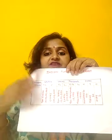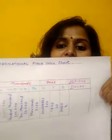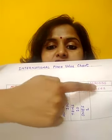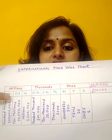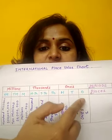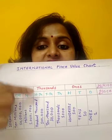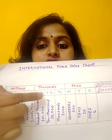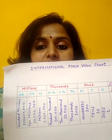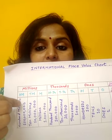Now, what is the difference between the Indian and international system? The number of digits does not change at all; only the placement changes — the period changes. Let me show you the chart based on the international place value system. As you can see, the red column is of the periods and the other is of place values. The first period is the same as the Indian system, consisting of ones, tens, and hundreds. In the second period, instead of lakh, they use hundred thousand — that is, thousand, ten thousand, and hundred thousand. And after that, for crores, it becomes million, ten million, and hundred million. They divide their periods into sets of three.